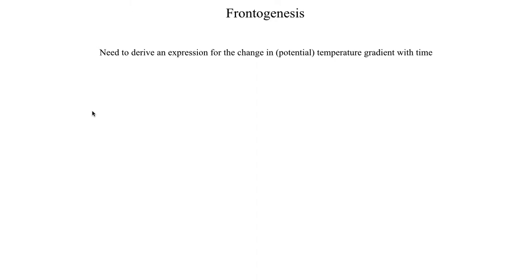To get into the mathematics, we need to derive an expression for the change in temperature gradient in time. We're going to use the potential temperature gradient so that we can properly quantify this for both surface fronts and upper air fronts. The best way to accomplish that is to use potential temperature instead of actual air temperature.